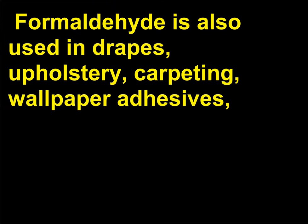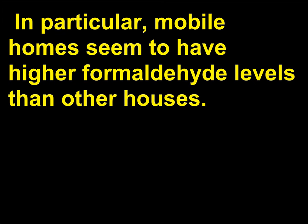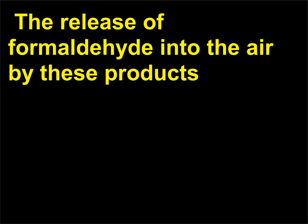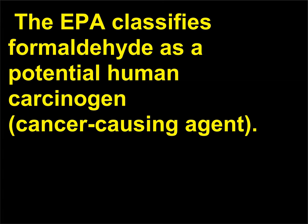Formaldehyde is also used in drapes, upholstery, carpeting, wallpaper adhesives, milk cartons, car bodies, household disinfectants, permanent press clothing, and paper towels. Mobile homes seem to have higher formaldehyde levels than other houses. The release of formaldehyde into the air by these products, called outgassing, can develop poisoning symptoms in humans. The EPA classifies formaldehyde as a potential human carcinogen (cancer-causing agent).